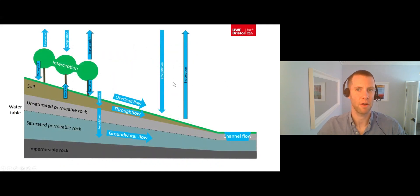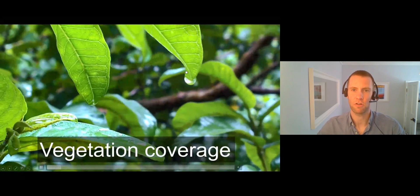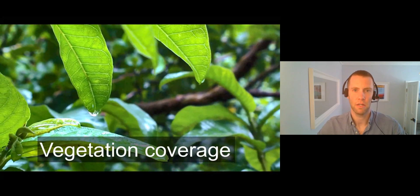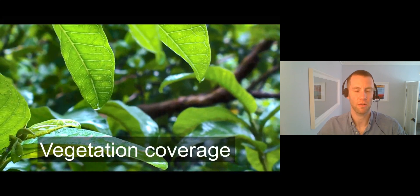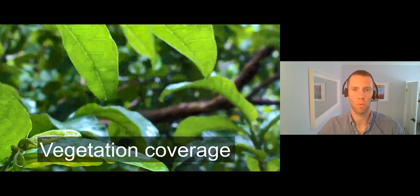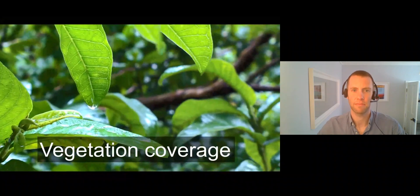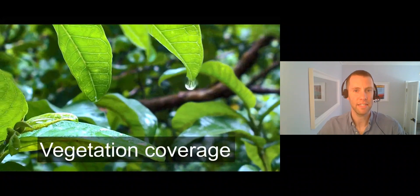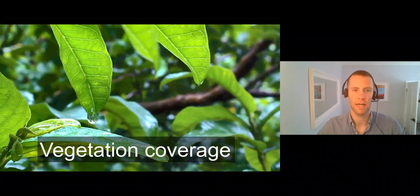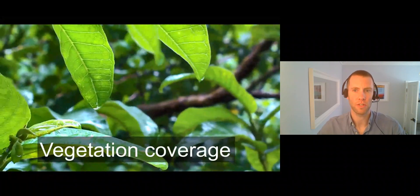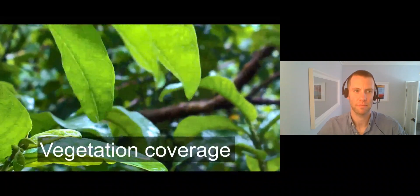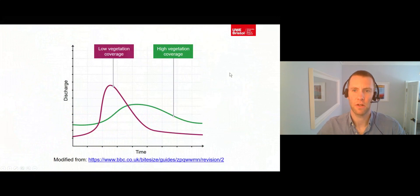Moving on to how natural factors affect the processes of interception, transpiration and evaporation. The greater the vegetation coverage across a drainage basin, the more precipitation will be intercepted, slowing the movement of water onto hill slopes and therefore into river channels. This causes lower levels of storm flow to enter the channel, resulting in a less flashy drainage basin. In addition, more vegetation means that more of the intercepted water is turned to water vapour via evaporation, and more of the water in the soil is converted into water vapour via transpiration. This will cause drainage basins with higher vegetation cover to have lower levels of storm flow entering the channel, resulting in a less flashy hydrograph.